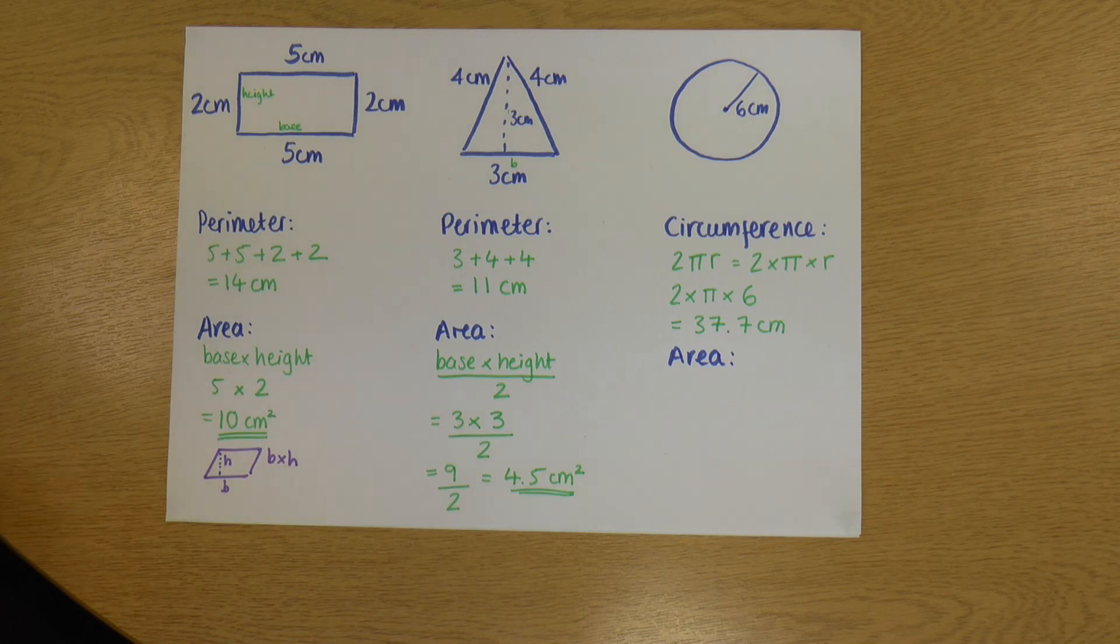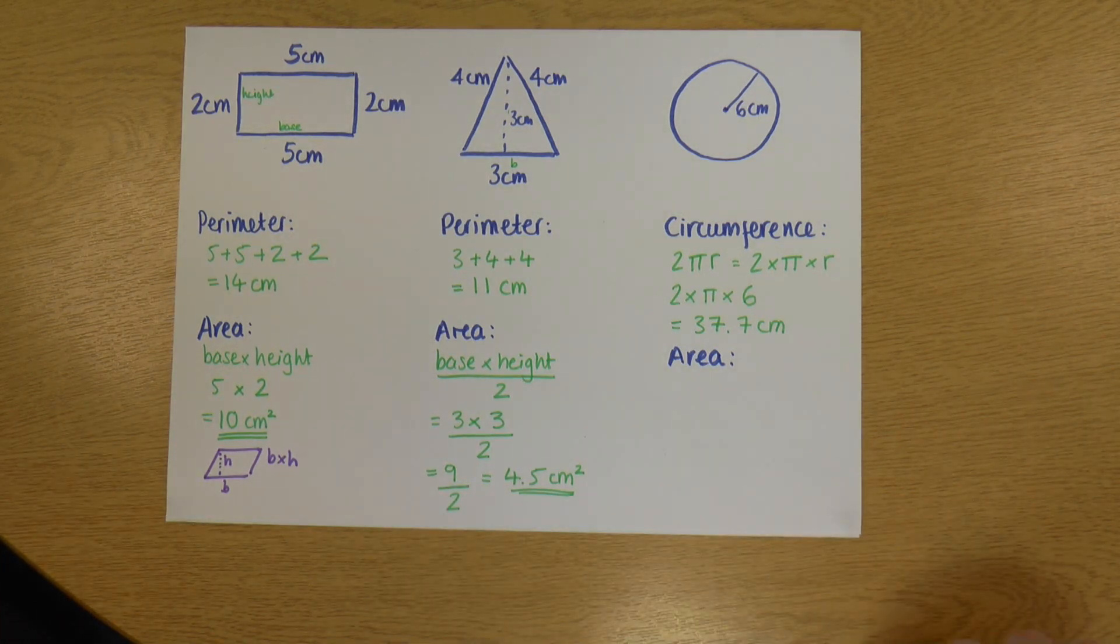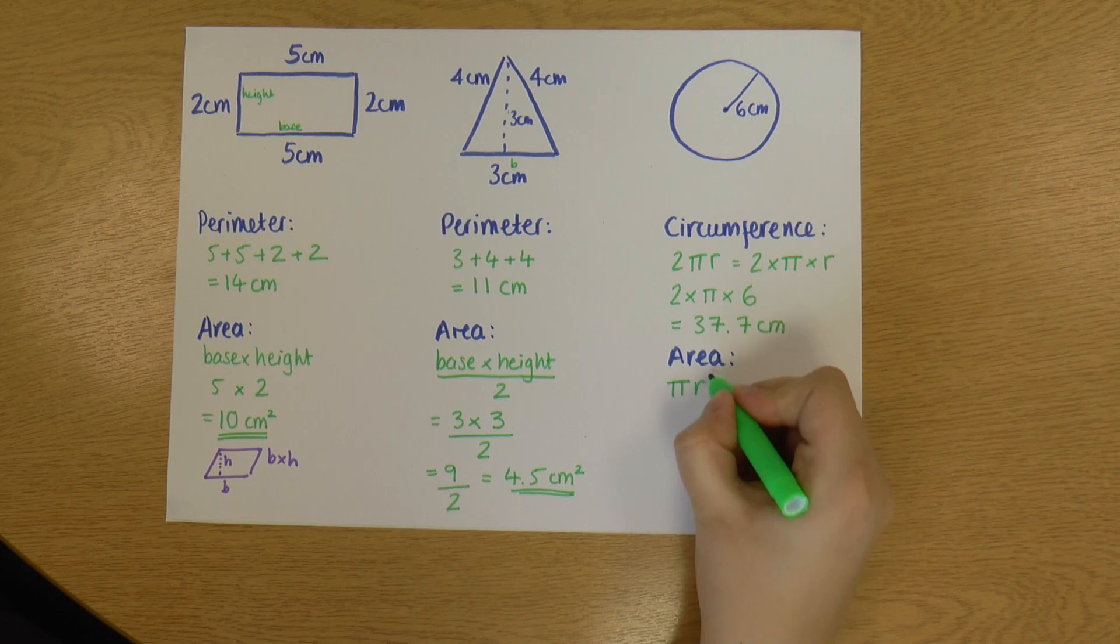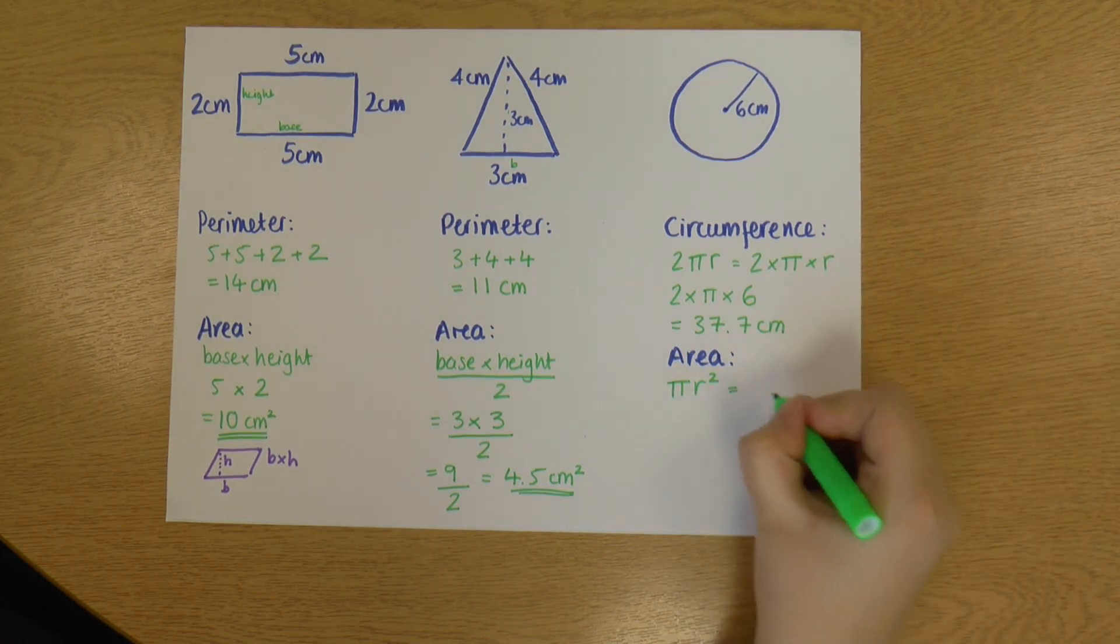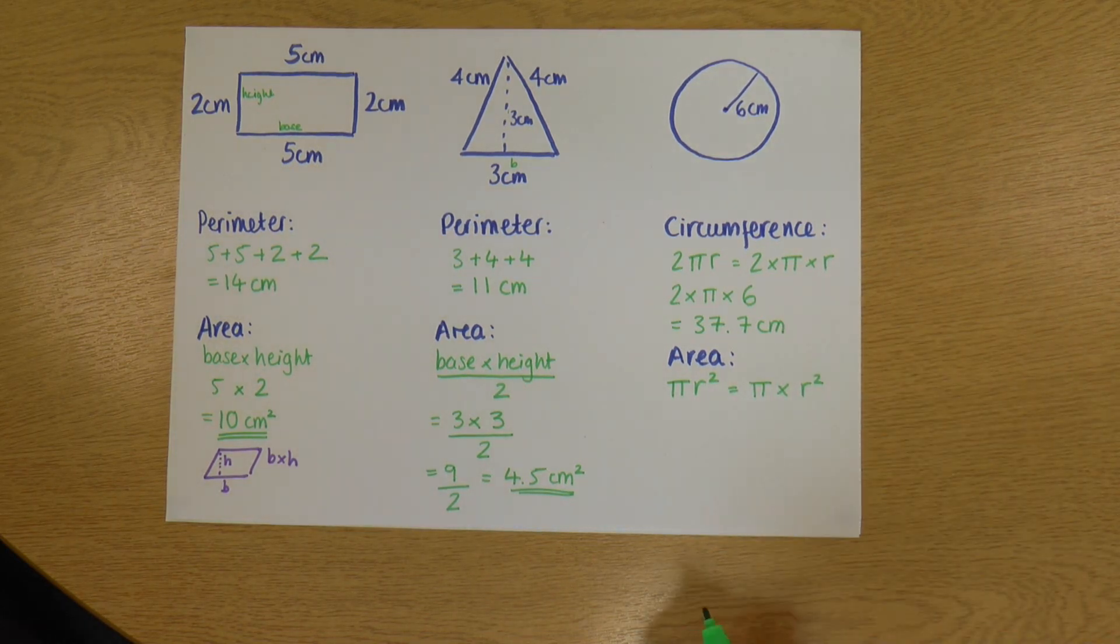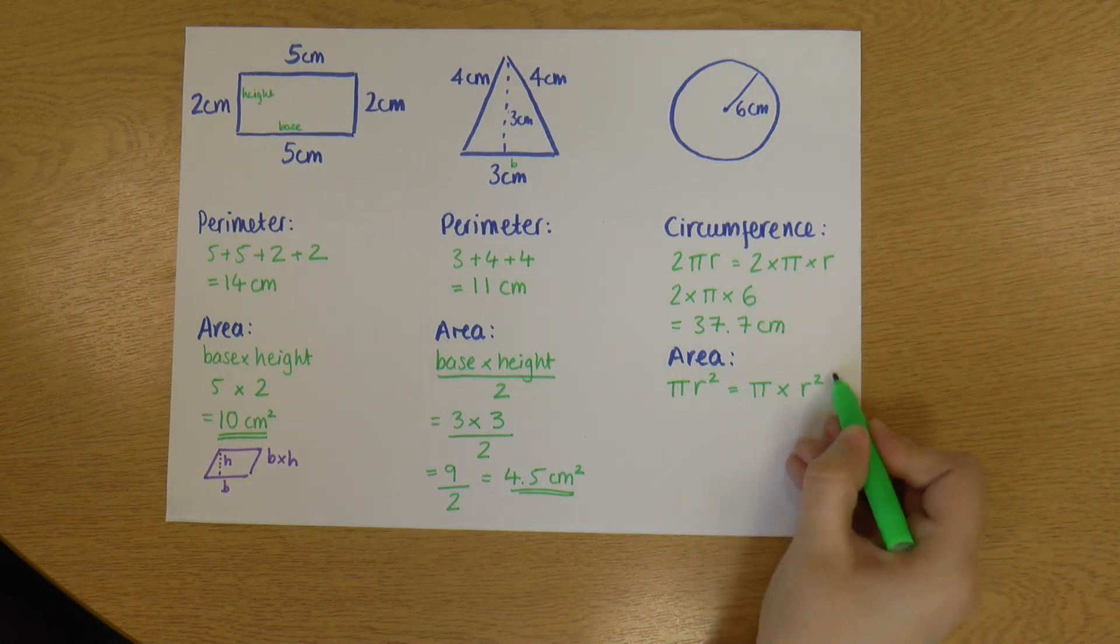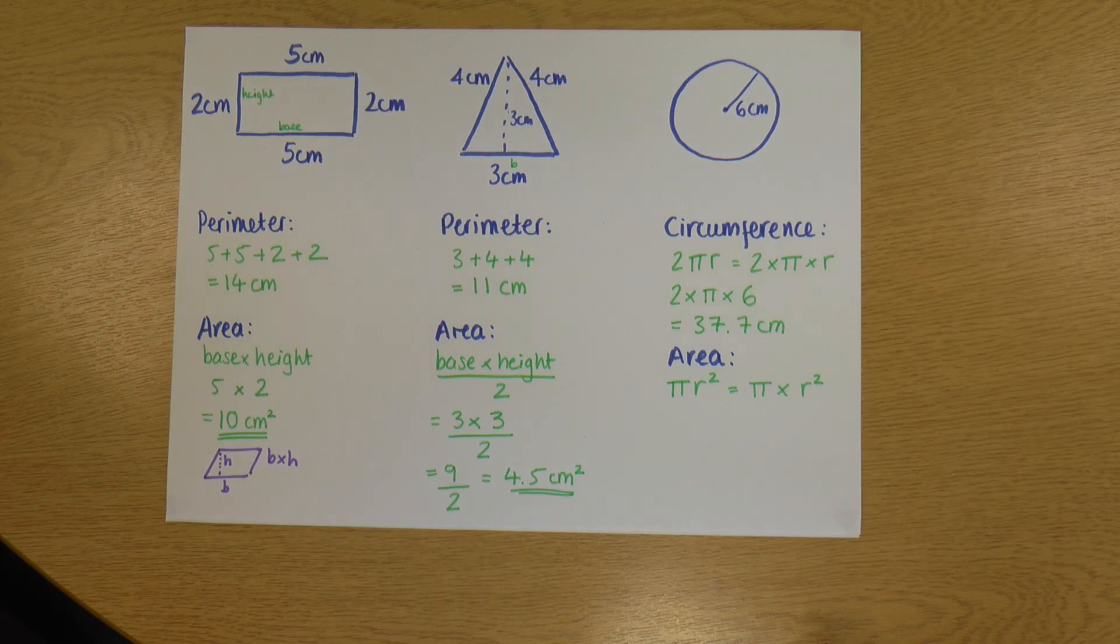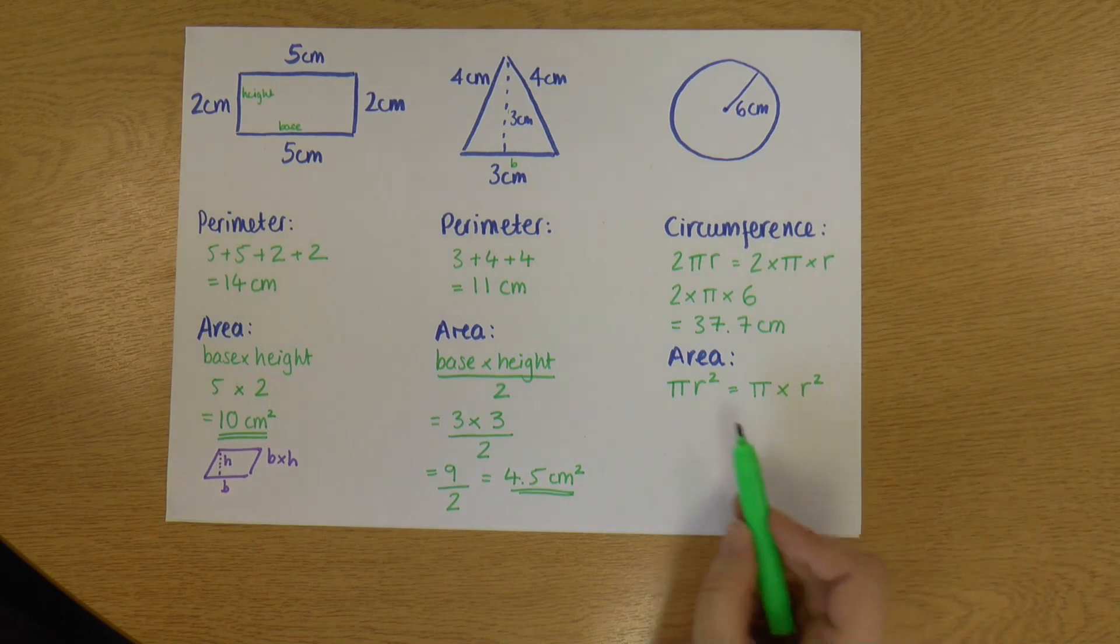And then we come to our friendly awkward one, the circle. So the circle once again works slightly differently. It has a different formula again. So this time, the area of a circle is πr², which means π times r squared. And if you remember our order of operations, our BODMAS, BIDMAS, whatever you want to call it, we're doing the r squared first because the indices have to be done first. So that's really important when we're doing this area of a circle.